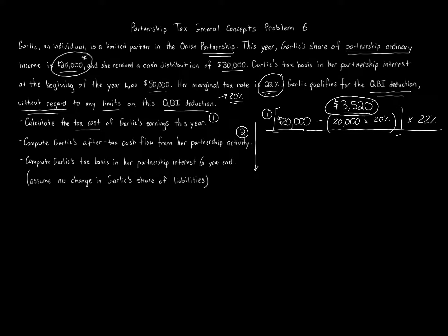This question is meant to help you understand the distinction between allocation of items of income, loss, and deduction versus distribution. In question one, everything is essentially on paper — we allocate items to the partner. But even if the person does not receive that amount of cash, Garlic is still subject to the same tax. The distribution of thirty thousand dollars represents actual cash flow. So for after-tax cash flow, we take the cash distribution amount.